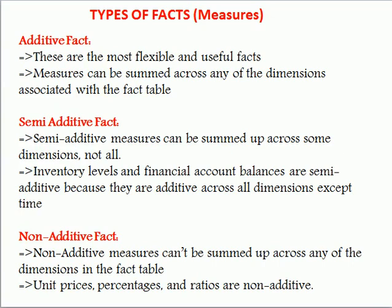There are three types of facts: additive fact, semi-additive fact, and non-additive fact. Additive fact means any fact table measure that you can aggregate across all dimensions. For example, in your fact table you have sales quantity — you can take the sum of quantity for all dimensions. That quantity is called an additive fact.